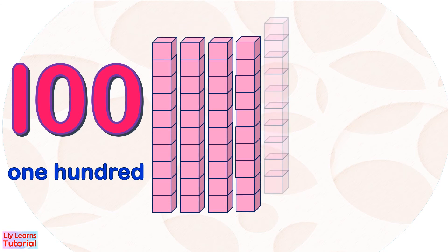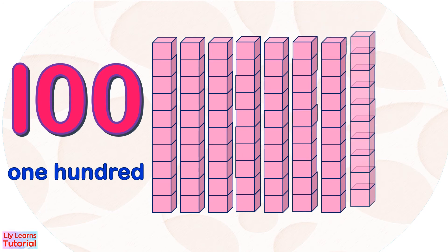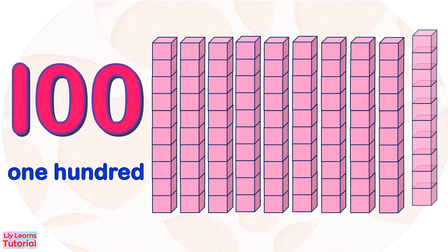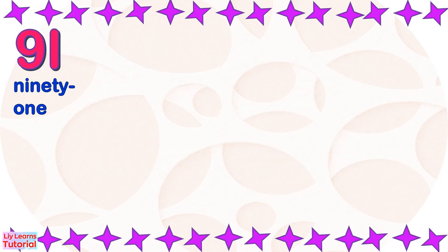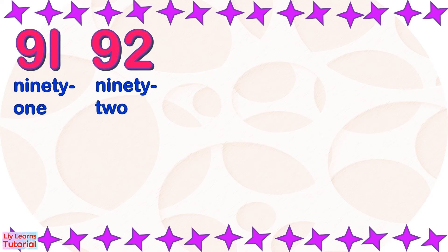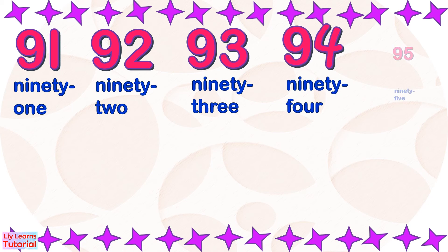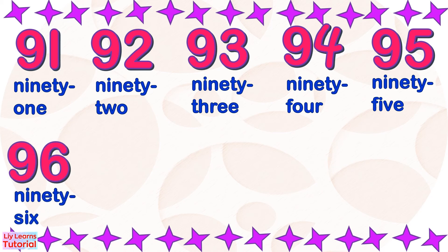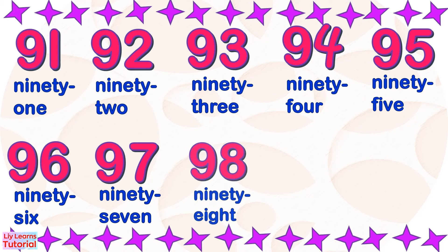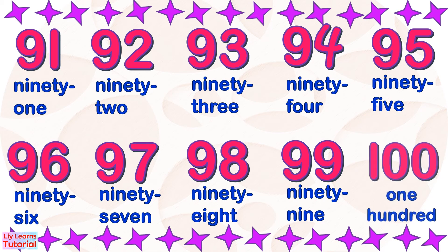One hundred. Ten, twenty, thirty, forty, fifty, sixty, seventy, eighty, ninety, one hundred. We'll count one more time: ninety-one, ninety-two, ninety-three, 94, 95, 96, 97, 98, 99, 100.